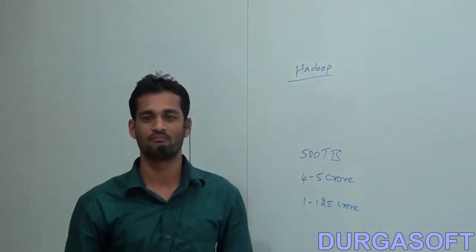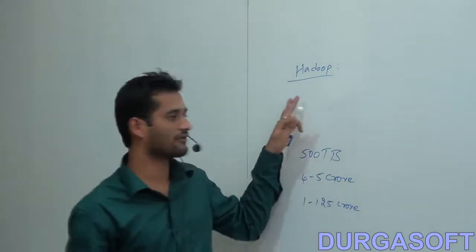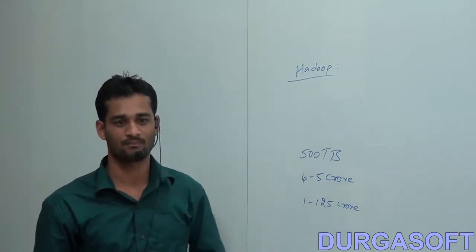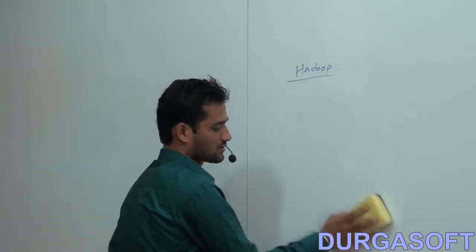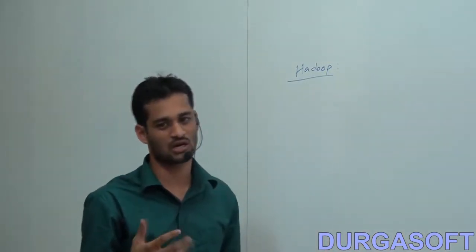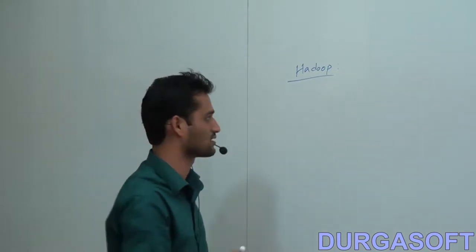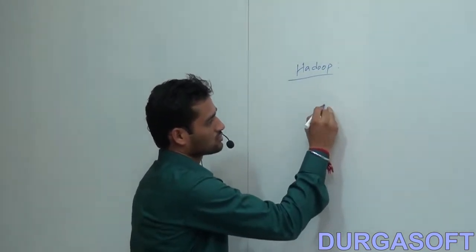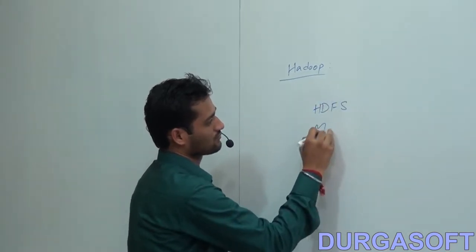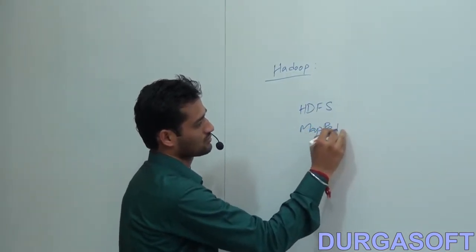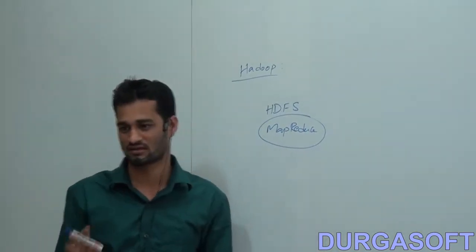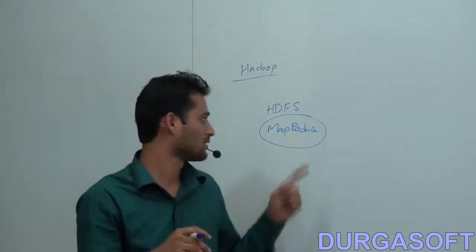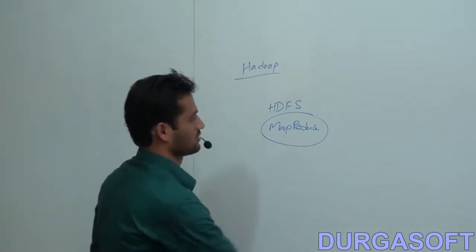Basically, Hadoop is a combination of HDFS and MapReduce — it stores data with HDFS and processes data with MapReduce. These are the two core components of Hadoop. We will discuss MapReduce later; now let's start discussing HDFS.